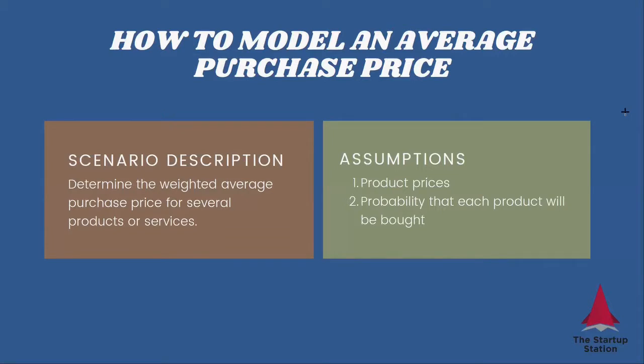What we're trying to determine is how much money a customer spends on average when we offer several products or services. What we need to know are our product prices and the probability that each product is going to be bought. The price is a discretionary decision.